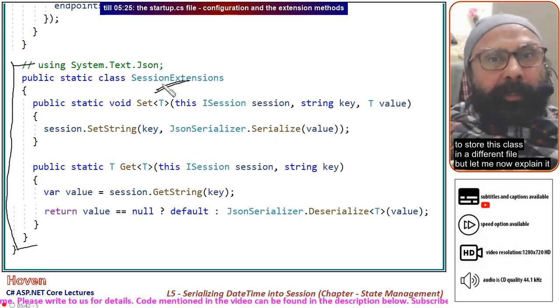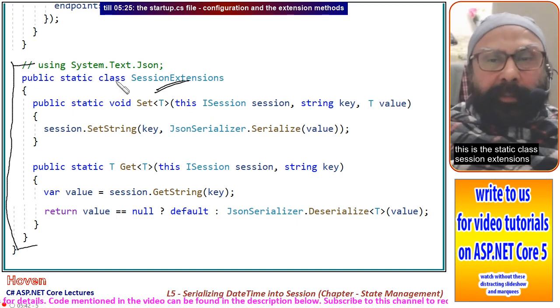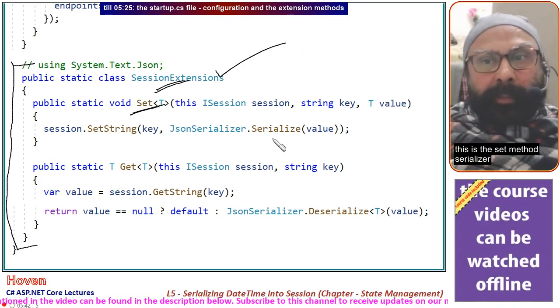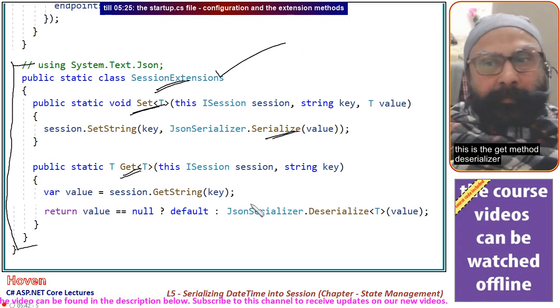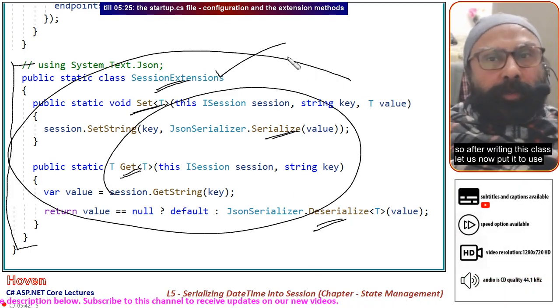The correct place is to store this class in a different file. But let me now explain it. This is the static class SessionExtensions. This is the Set method serializer. This is the Get method deserializer. So after writing this class let us now put it to use.